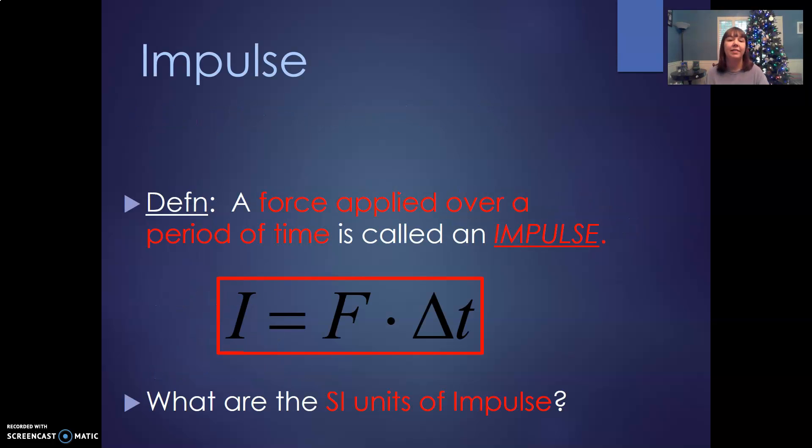Impulse is when you apply a force over a period of time. That's called impulse. Impulse is force times time. So what are the units of impulse? Well, force is measured in newtons. Time is measured in seconds. So like momentum, it doesn't have a cool name to it. Impulse is measured in newton seconds.